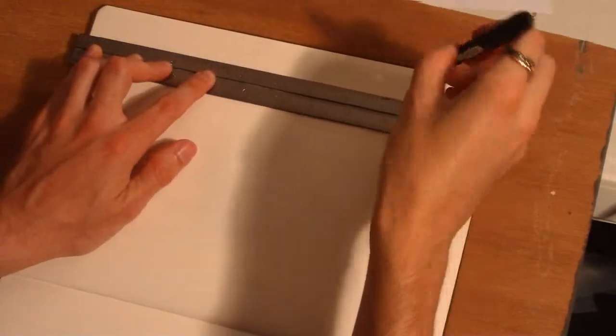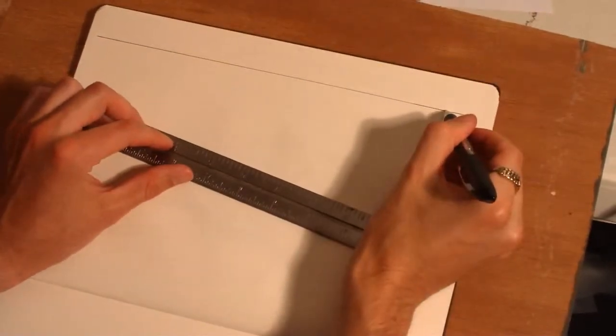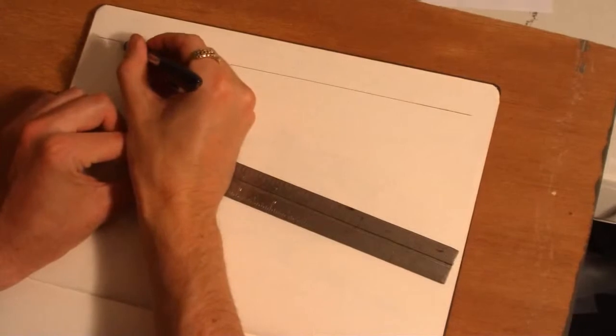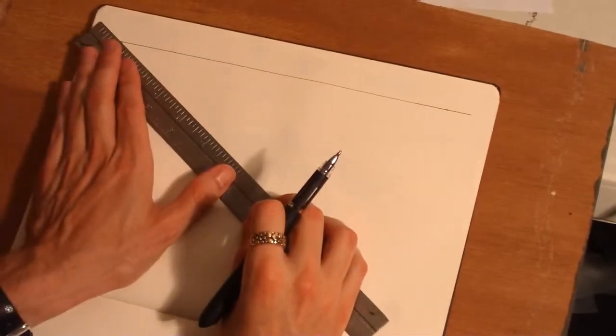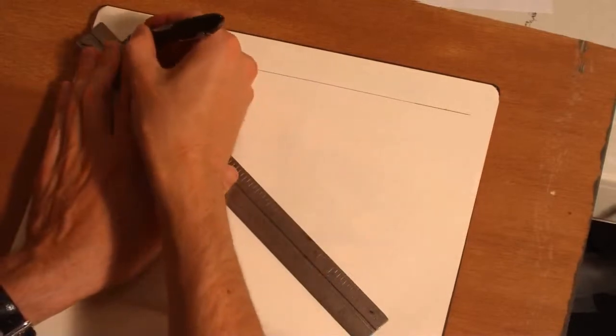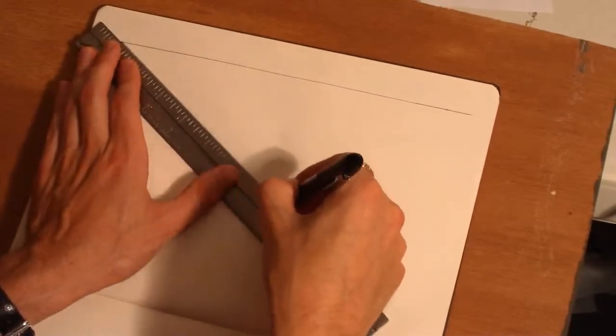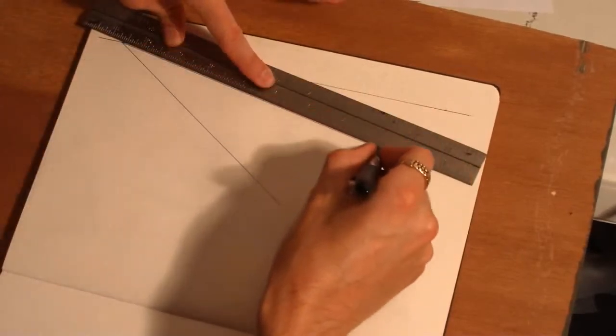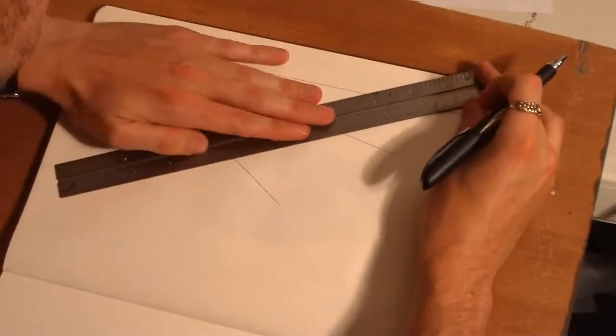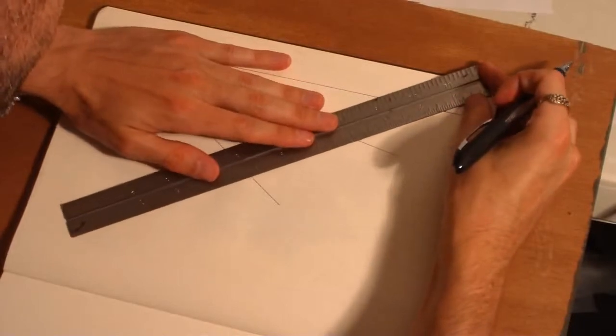So I'm going to go ahead and draw a horizon line, I'm going to pick a couple of vanishing points, and then I'm going to draw a plane in two-point perspective by pulling a couple of lines from each vanishing point.